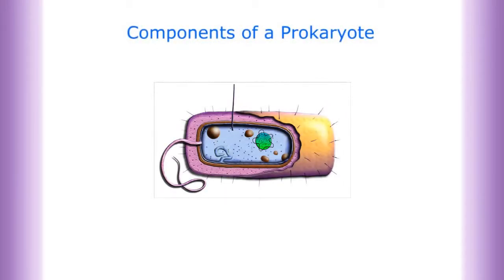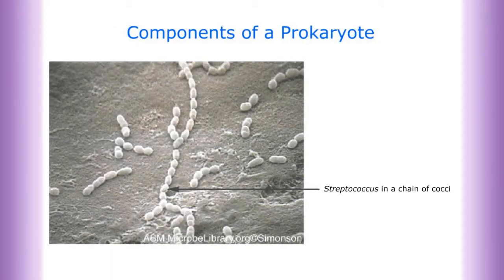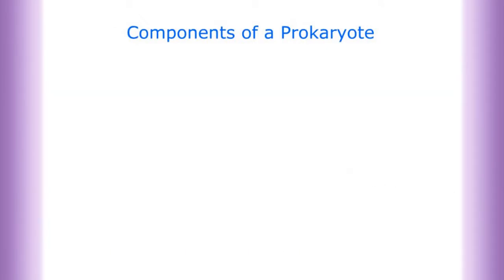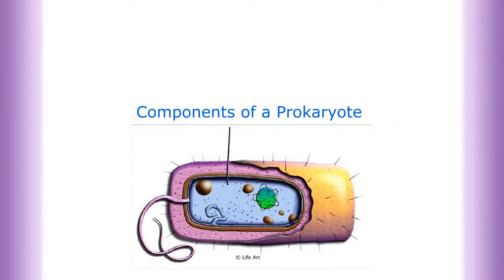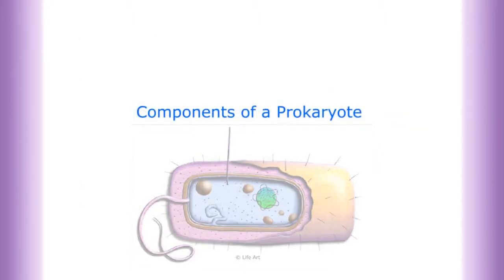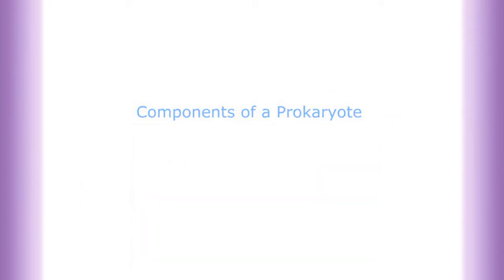Components of a prokaryote. A prokaryotic cell is a single-celled organism. Prokaryotes include bacteria cells. There are more bacteria on our planet than any other organism, and they are overwhelmingly beneficial — they recycle our nutrients, produce antibiotics, and preserve our food. A very few are harmful and cause disease. Let's examine the components of a prokaryotic cell.